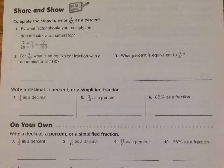For problem number one, it walks you through the steps to write seven-twentieths as a percent. Question one says, what factor should you multiply the denominator and the numerator by to get a hundred? Twenty times what will give you a hundred? Twenty times five will give you a hundred. So that's what you should multiply by. You need to multiply both the numerator and the denominator by five.